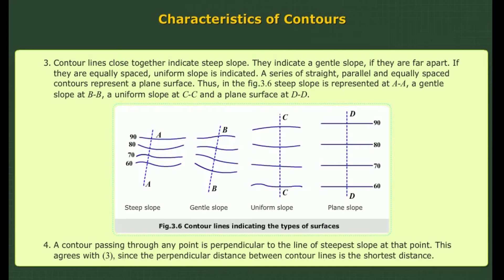4. A contour passing through any point is perpendicular to the line of steepest slope at that point. This agrees with the previous characteristic since the perpendicular distance between contour lines is the shortest distance.